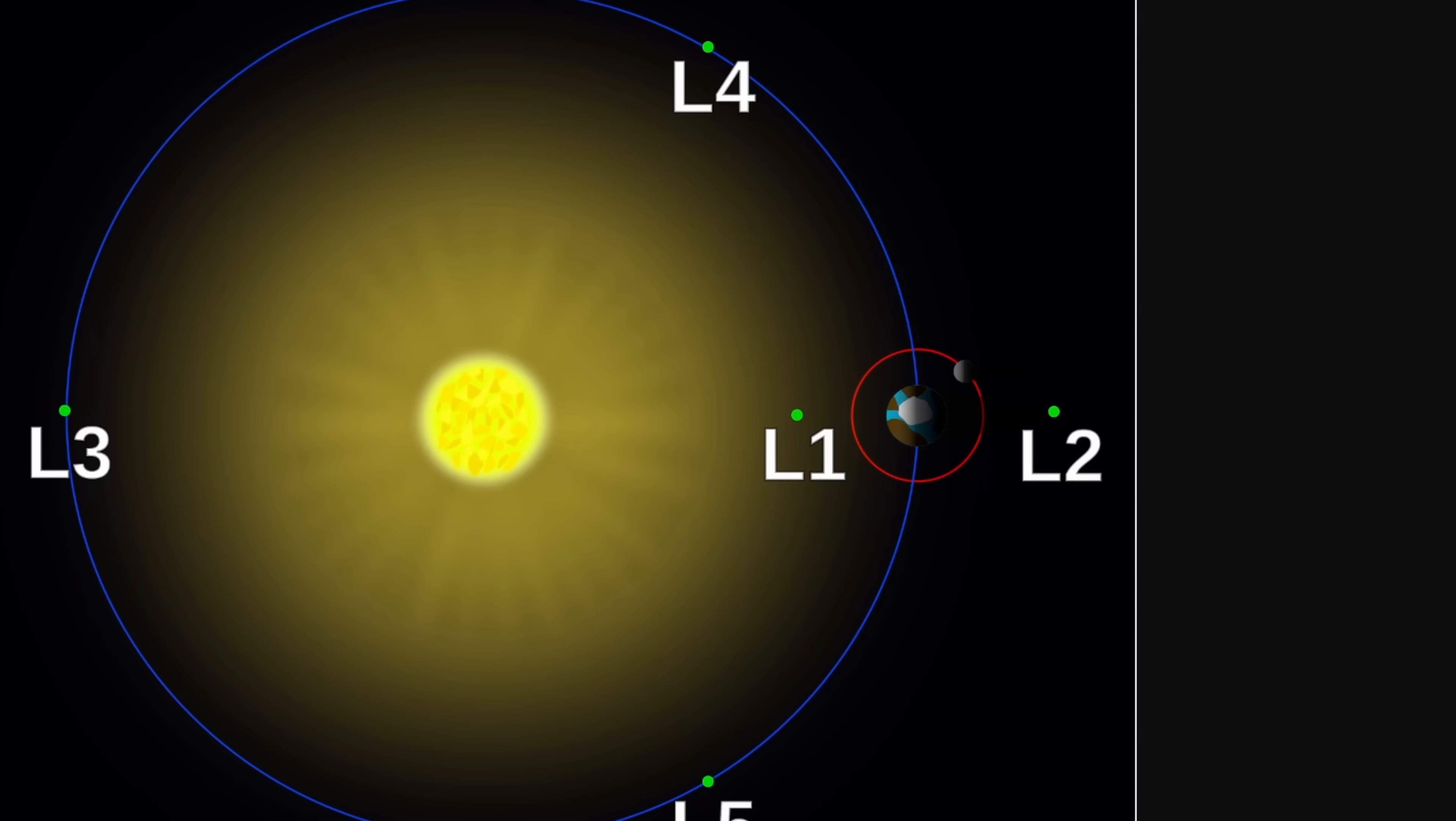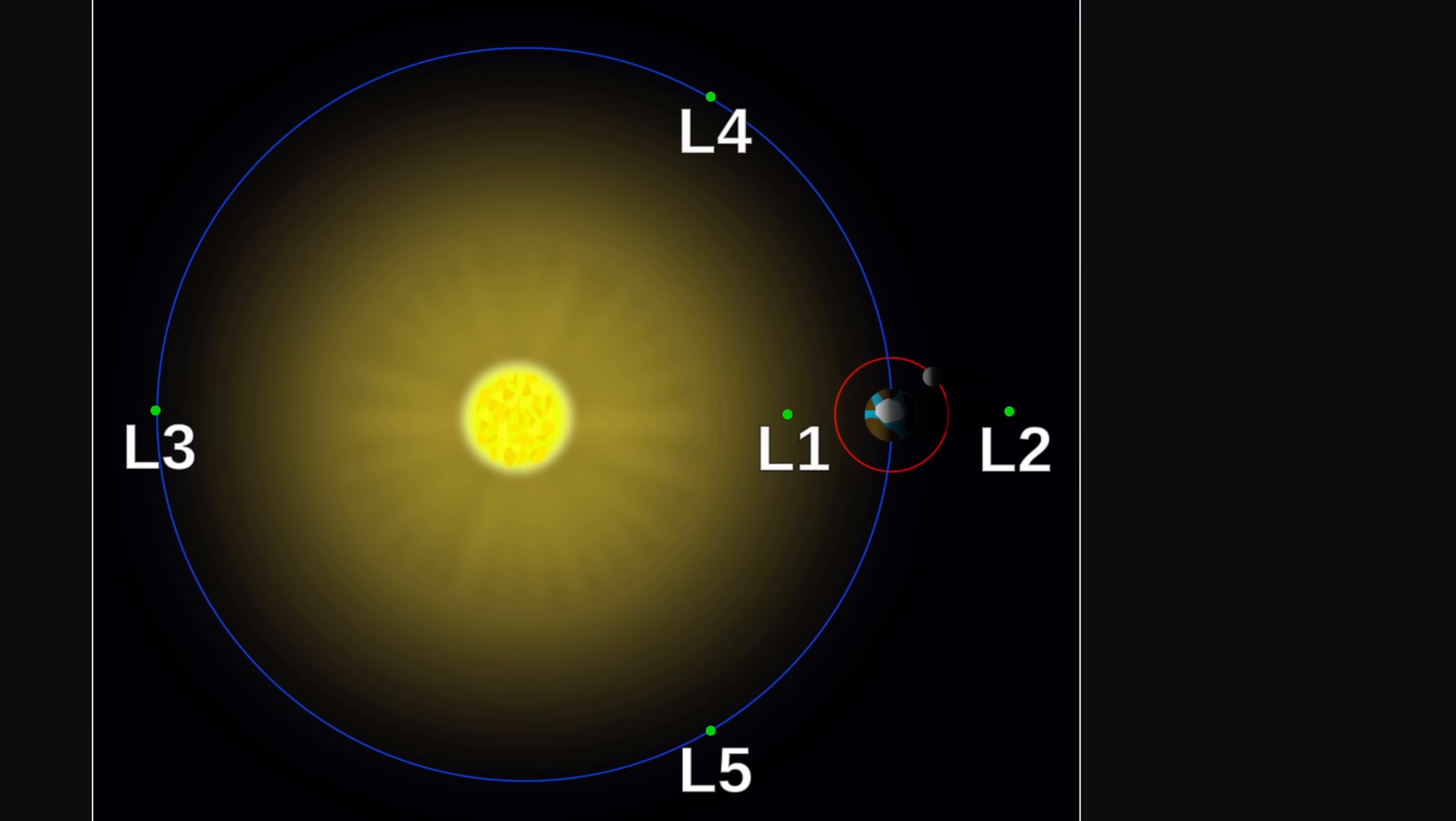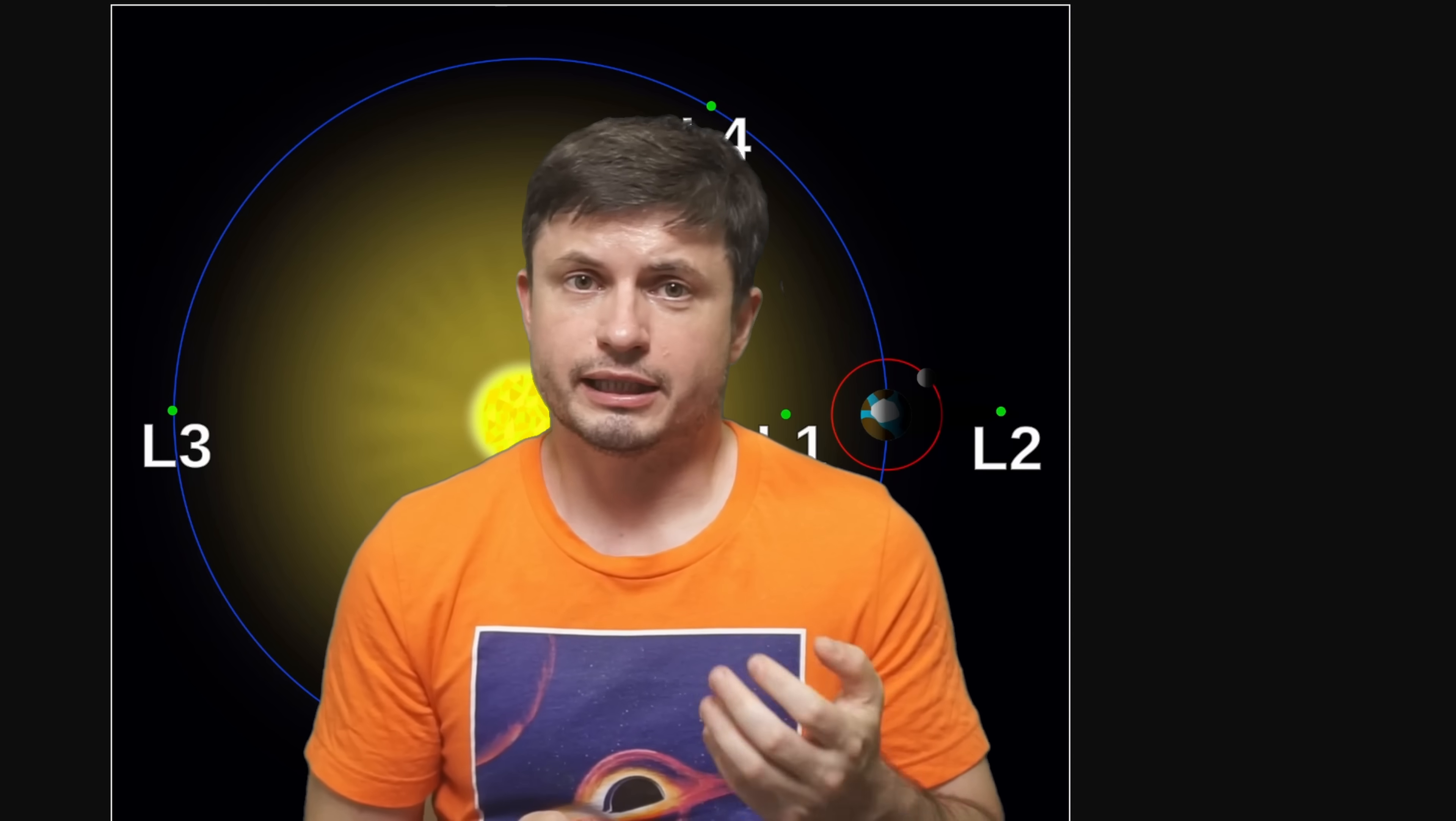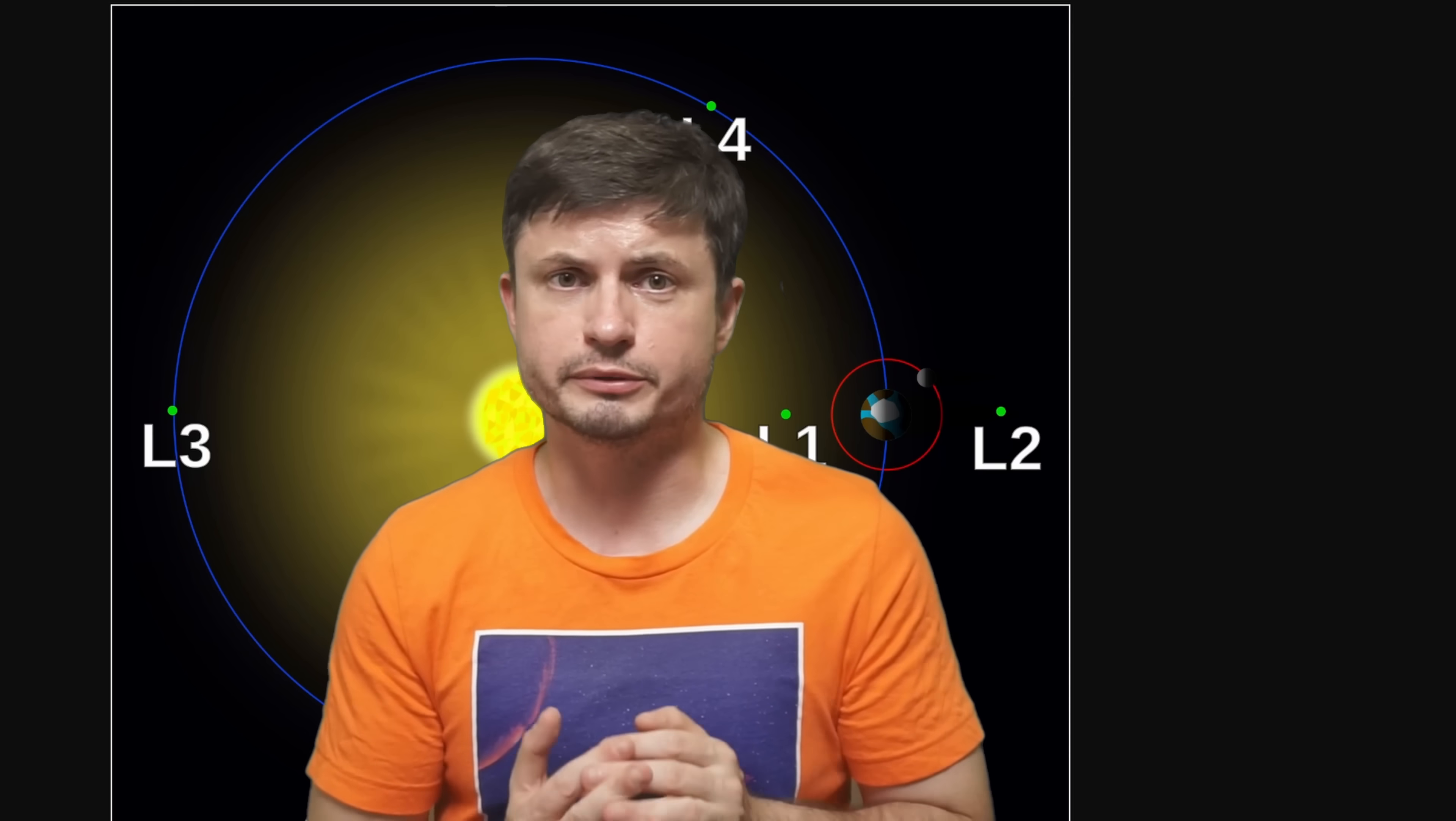Likewise we have some satellites in L1, but it's actually L3, L4 and L5 that are particularly interesting. Mostly because objects in those orbits can stay there for a very long time and can actually naturally assume those orbits and have done so around many different planets.